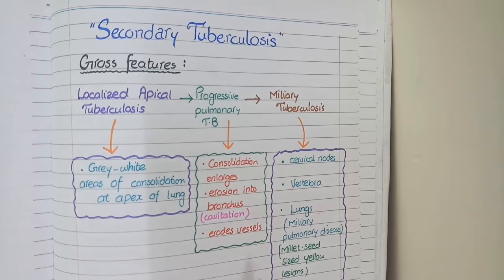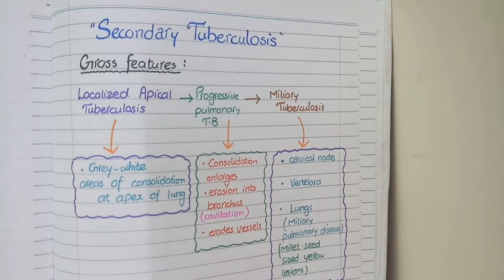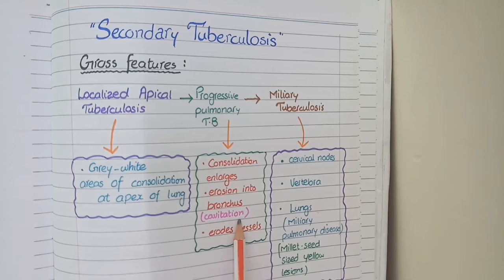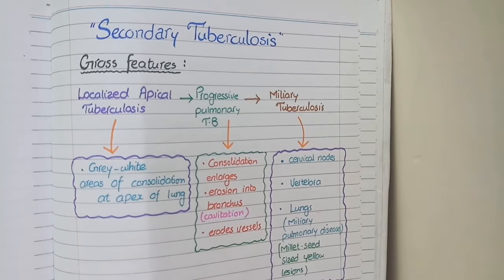And in addition to the erosion of bronchus, there may be erosion of the blood vessels. So overall in progressive pulmonary tuberculosis, you see consolidated areas converted into cavitations or you see erosion of vessels by inflammatory material.